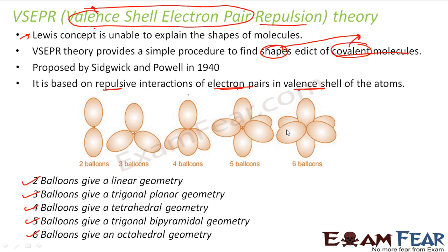The same principle applies in valence shell electron pair theory. Instead of balloons, we have orbitals each containing two electrons. They repel each other just like balloons do, and thus the molecule gets a particular shape — linear, trigonal planar, tetrahedral, trigonal bipyramidal, or octahedral — depending on the number of valence shell electron pairs.